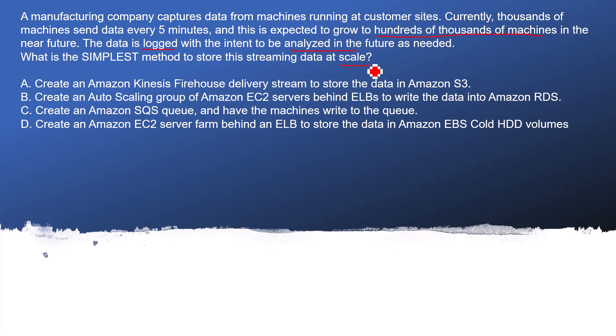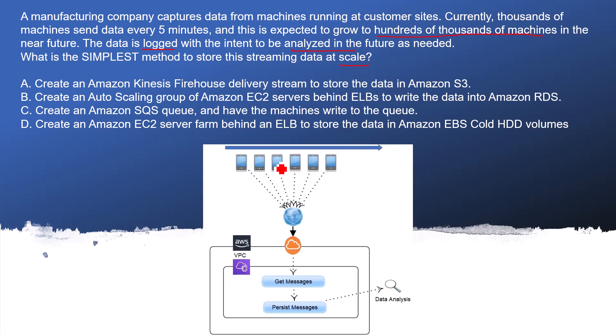Let's visualize this question with a diagrammatic view. There are machines right now — a finite number in the thousands — and it is expected to grow to hundreds of thousands in the future. Inside the AWS VPC, we are getting the message and persisting it — saving it to some location and analyzing it later on. Machine data is always heterogeneous and unstructured, so we should not save it to a relational database. We can save it to an S3 location, Redshift, or use a NoSQL concept, but not RDB.